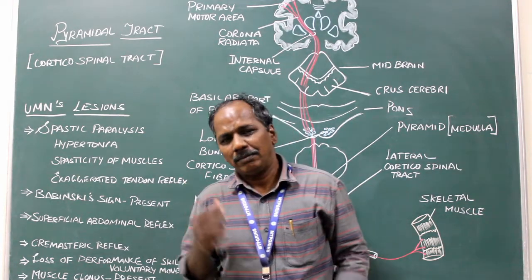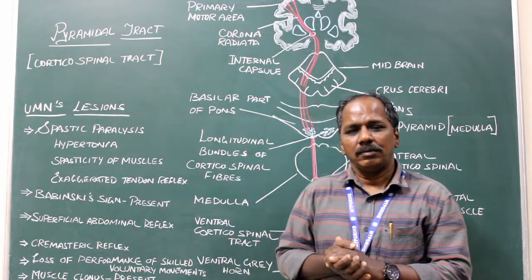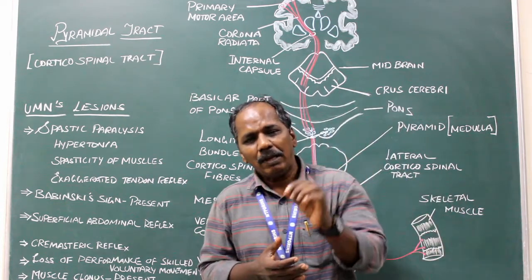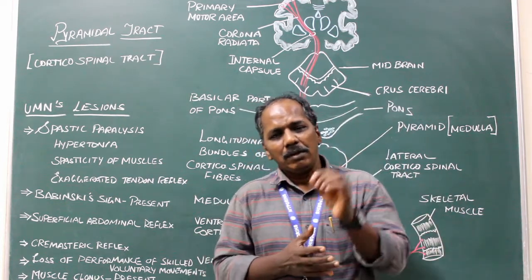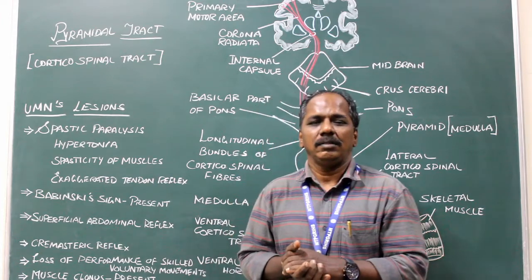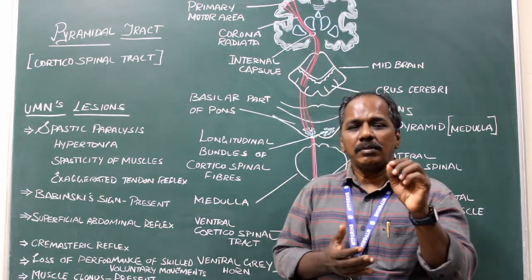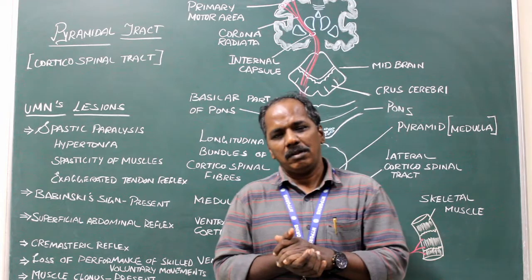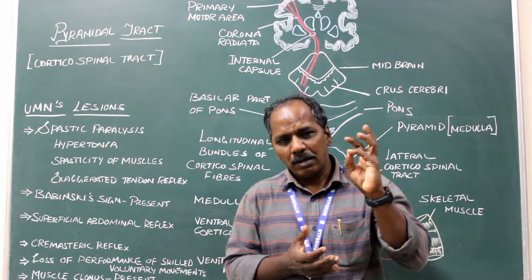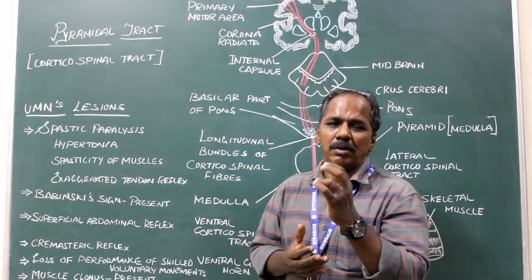Pyramidal system. The pyramidal system is the main voluntary motor pathway. It consists of two neurons: upper motor neuron and lower motor neuron.